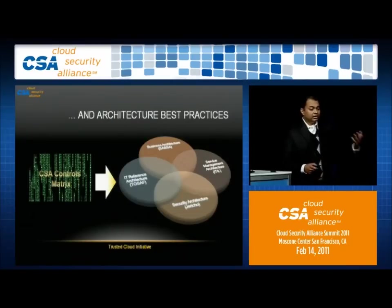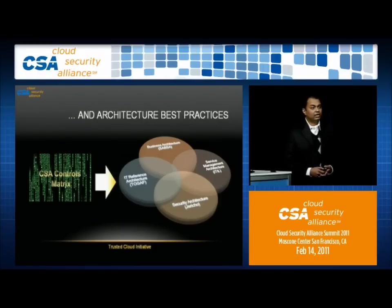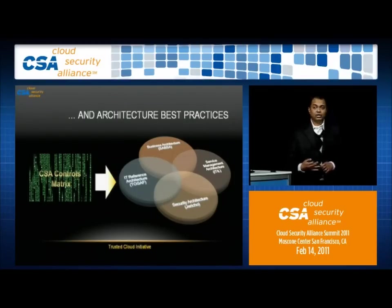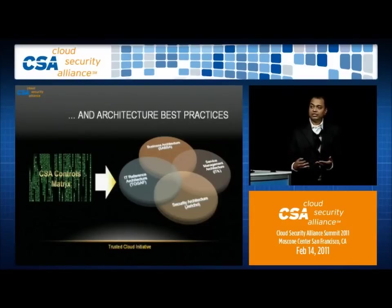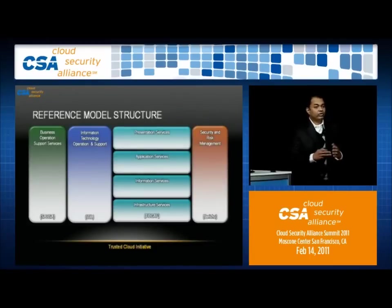This controls matrix is then meshed with all the different best-practice architectures that companies have been using — things like SAPSA for business architecture, ITIL for service management, GERICO for security architecture, and TOGAF for IT reference architecture — to get the best of best practices from each, mapping them to the controls matrix and coming out with a reference model.